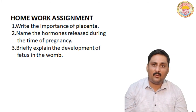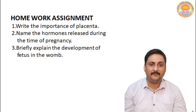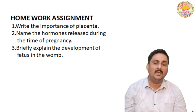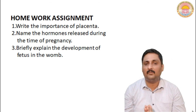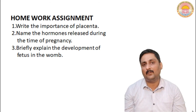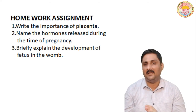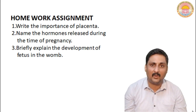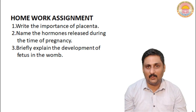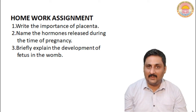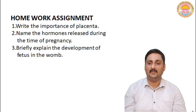Also briefly explain the development of the fetus in the womb from the first month to the ninth month — when the heart is formed, when the hands and digits are formed, when the whole genital system is formed, and when hairs appear on the body. That is all given in the NCERT. I hope you liked my lecture. Thank you and have a nice day.